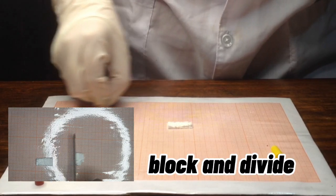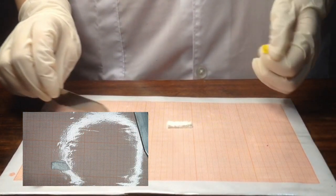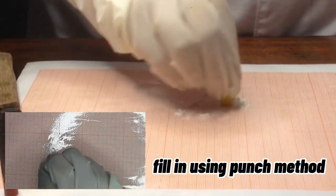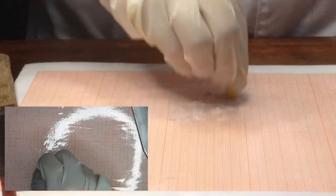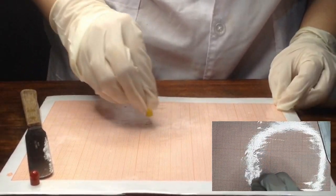Once done, lock and divide the powder. Fill the empty capsule with the divided powder using the punch method. Do this until all the powder is compact inside the capsule.